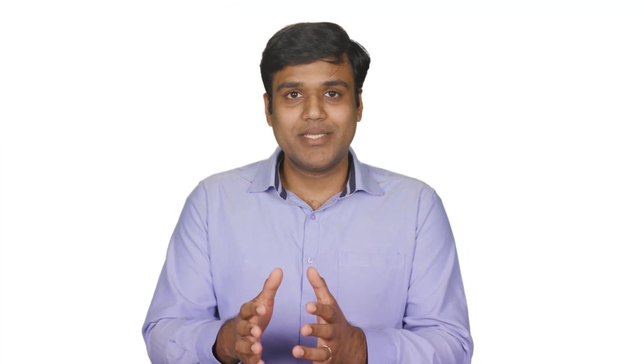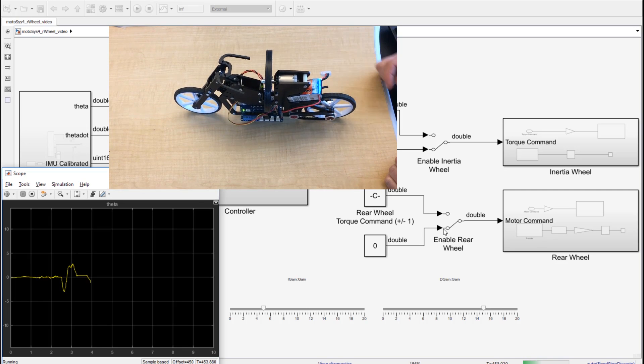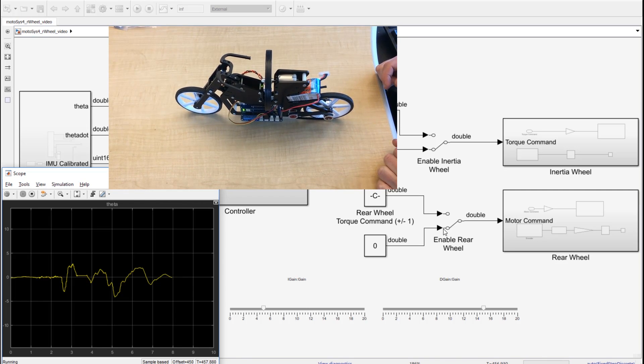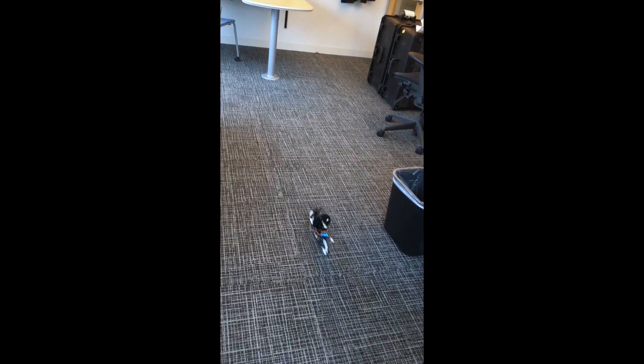Once we got the bike balancing in the simulation world, we moved to an Arduino and interactively tuned the controller until we had the actual bike itself balancing. With Simulink, we could quickly design the control algorithm and then automatically generate the code that gets deployed on the Arduino with just the click of a button.